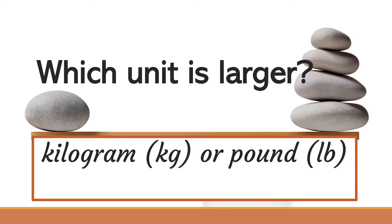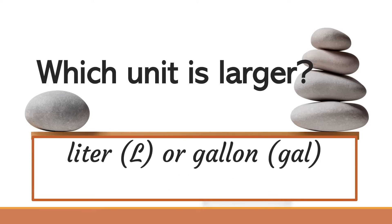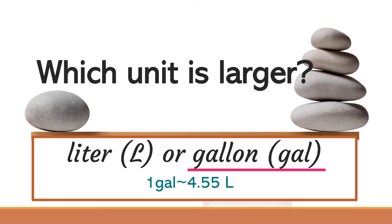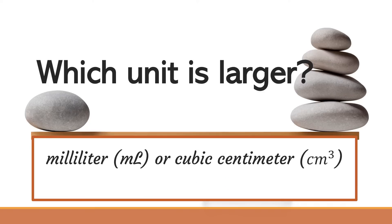Next, is it kilogram or pound? The larger unit is kilogram, since one kilogram is equal to 2.2 pounds. Is it liter or gallon? The larger unit is gallon, since one gallon is approximately 4.55 liters. And for the last one, which is larger: a milliliter or a cubic centimeter? They are equal because one milliliter is equal to one cubic centimeter.